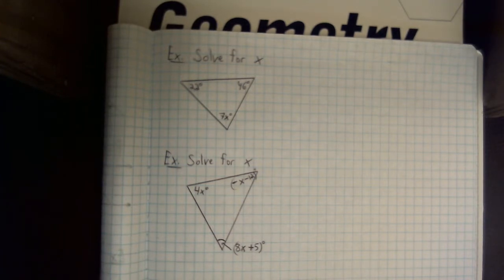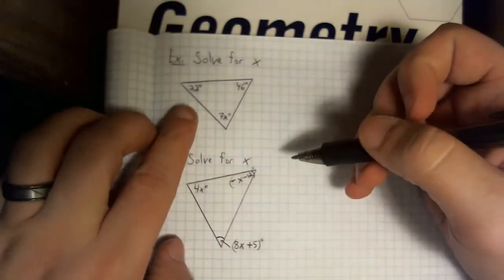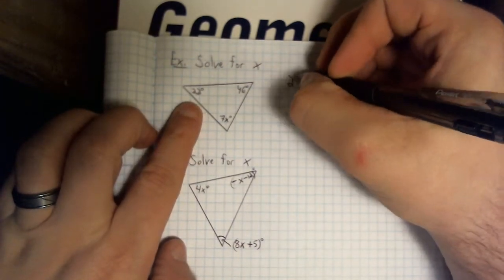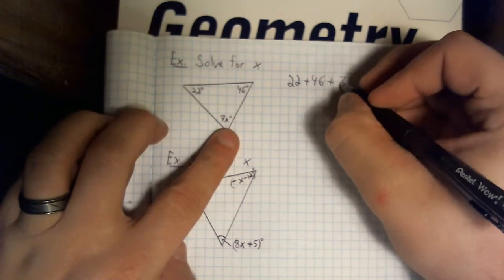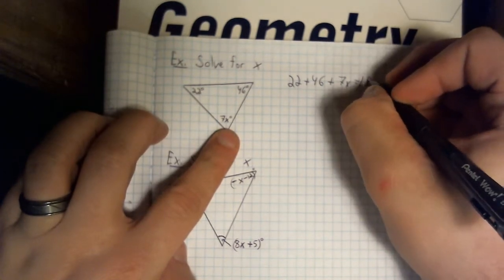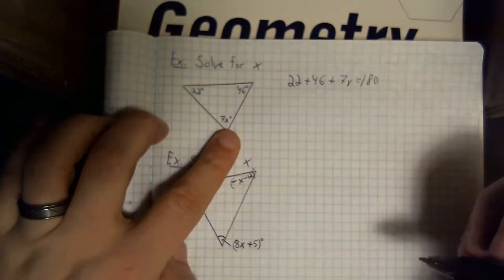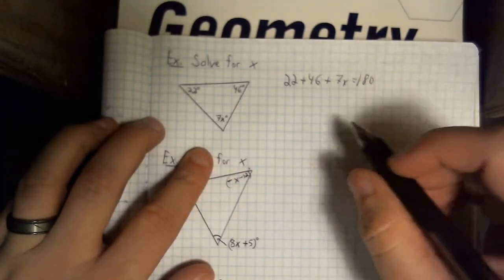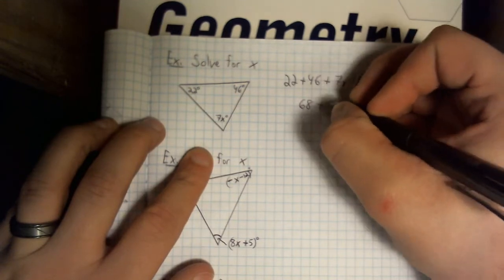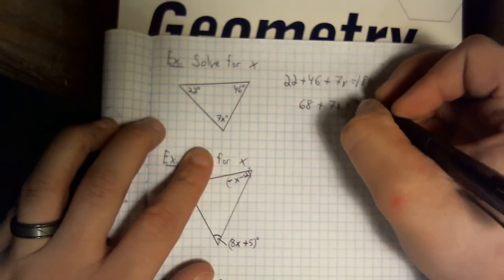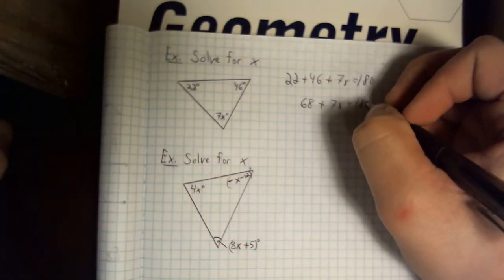Alright. Let's see how you did. We know that 22 plus 46 plus 7x should add to 180. That's just the triangle sum theorem. Let's add our like terms. Combine them. Let's see. That gives us 68 plus 7x equals 180 degrees.